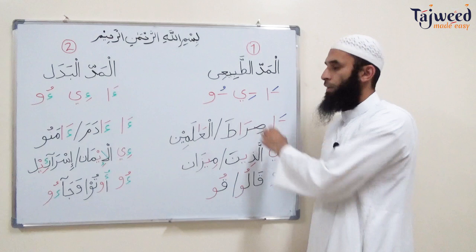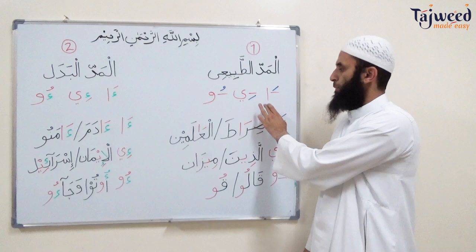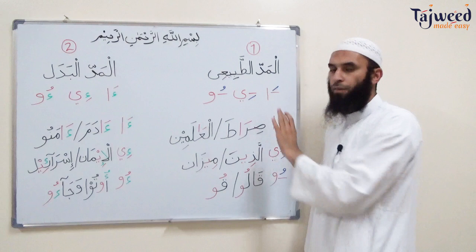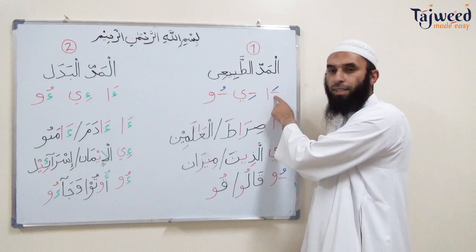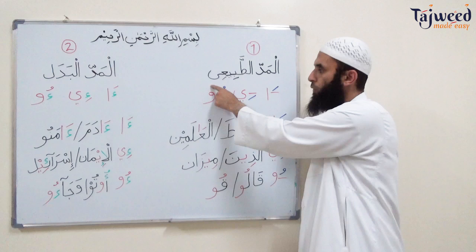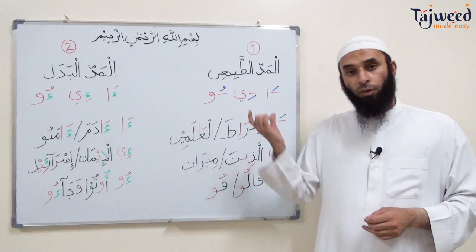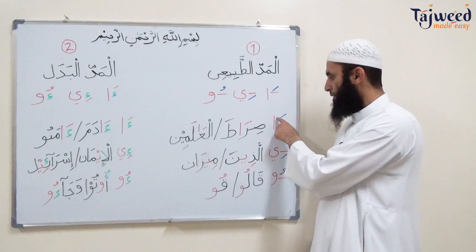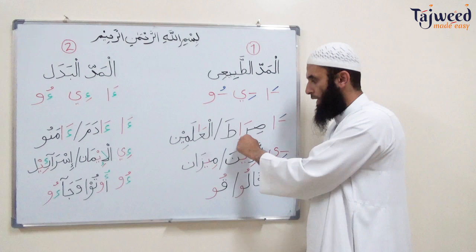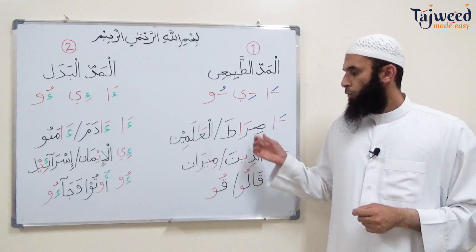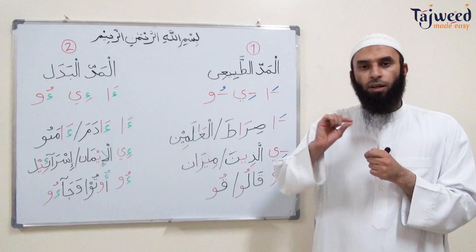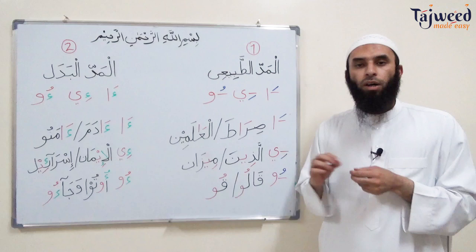Mad al-tabi'i: whenever there is alif with a sukun preceded by a letter that has a fatha, or ya with a sukun preceded by a letter with a kasra, or wa with a sukun preceded by a letter with a dhamma — if this happens inside the word and we're not stopping — then we stretch for two counts. For example, in sirata: there's an alif with sukun, preceded by ra with a fatha, so we stretch ra to two counts — sirata. Or al-alamin: two counts — al-alamin.